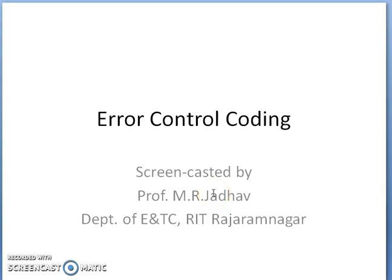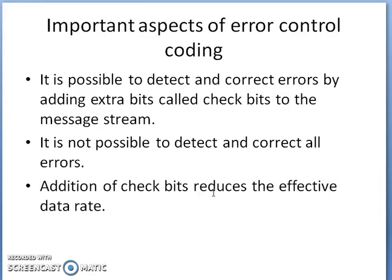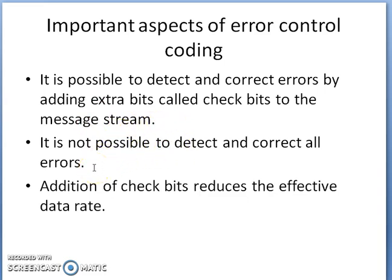Today we are going to learn about error control coding. It is possible to detect and correct errors by adding extra bits, which are called check bits, to the message. You can append the check bits after your message or interleave these bits into the stream of message bits. However, it is not possible to detect and correct all errors because every system has some advantages and loopholes.